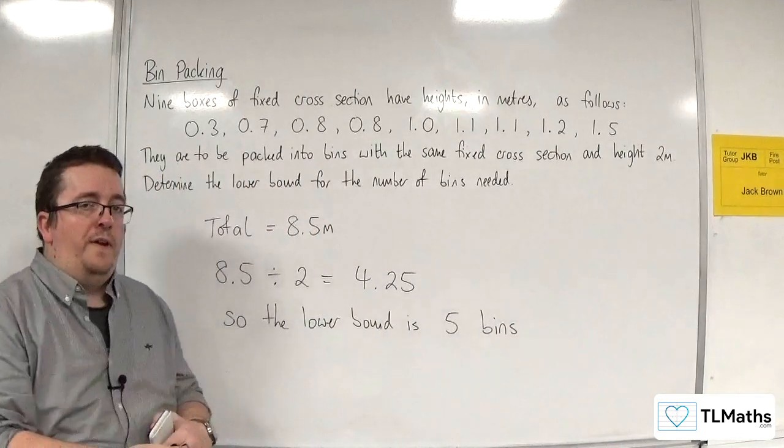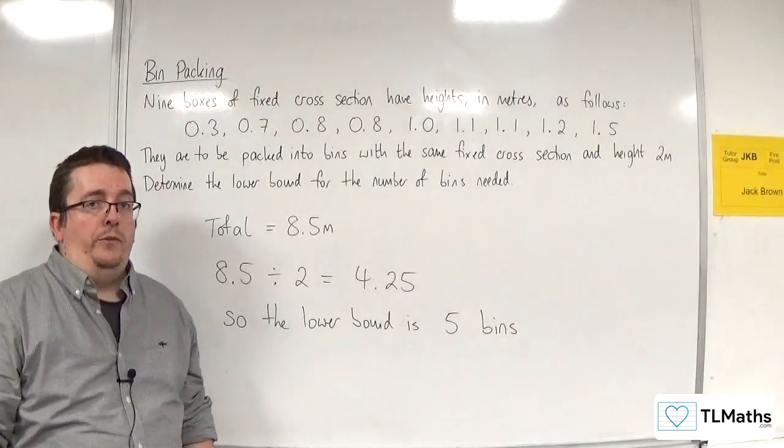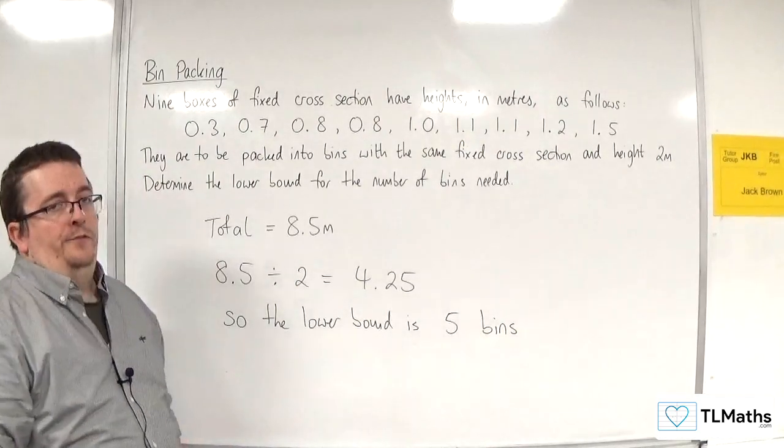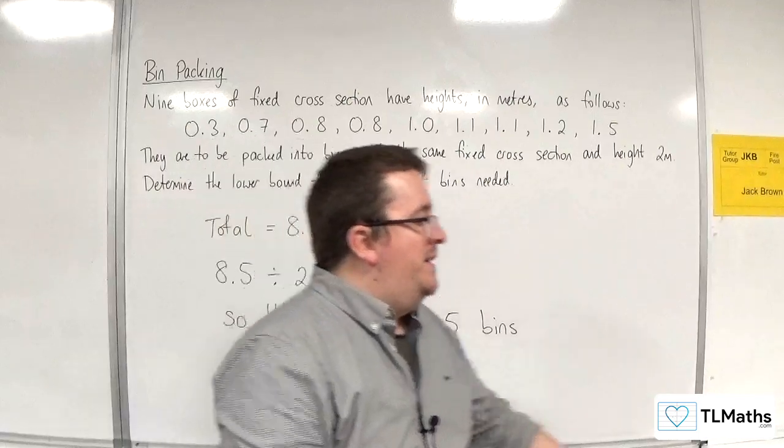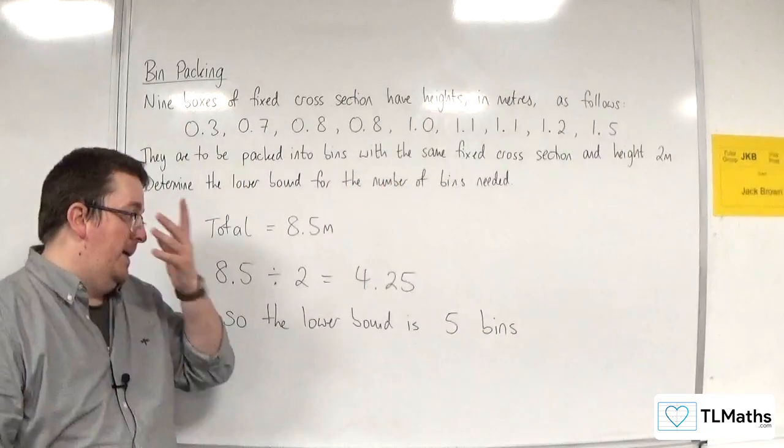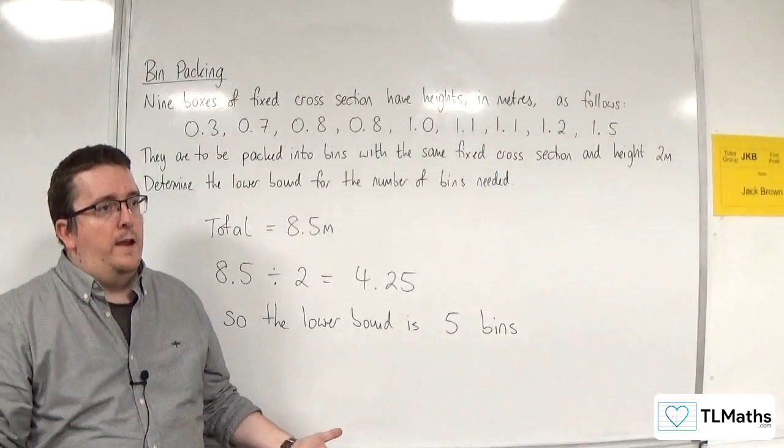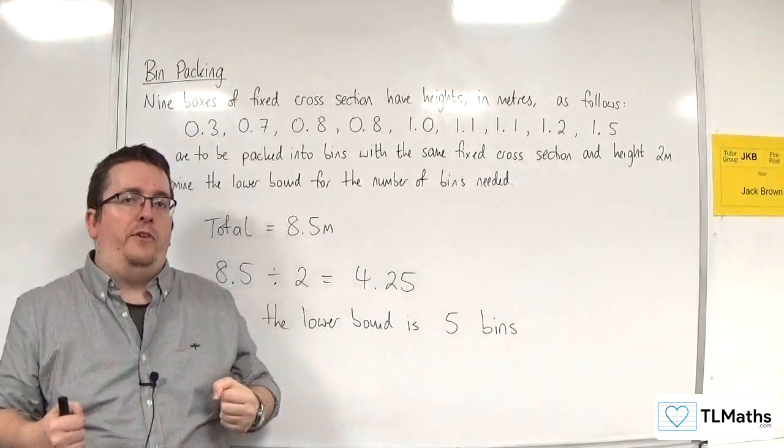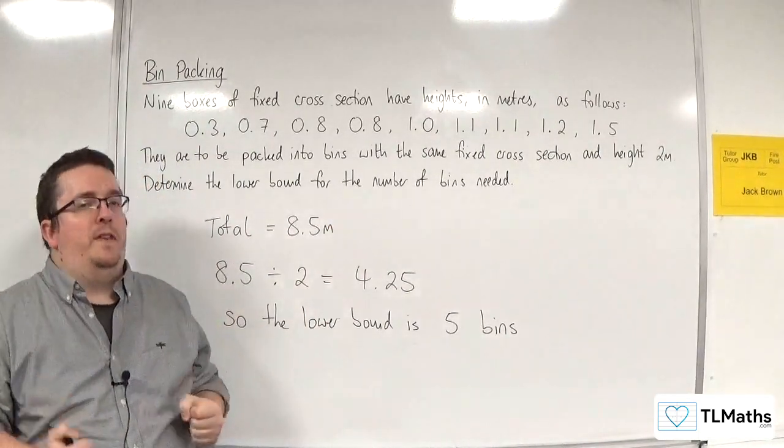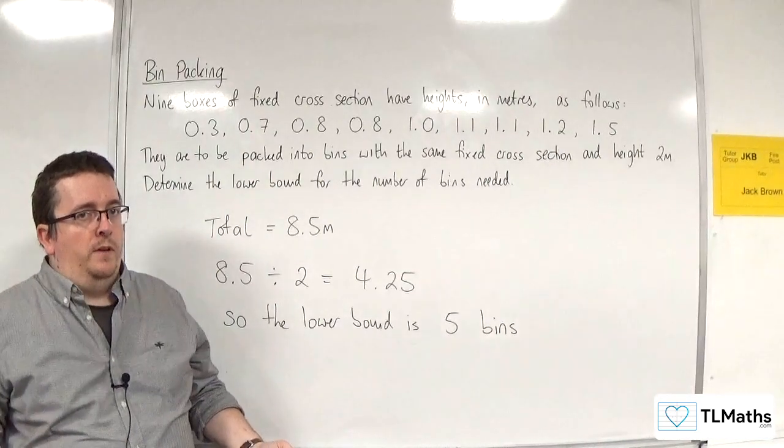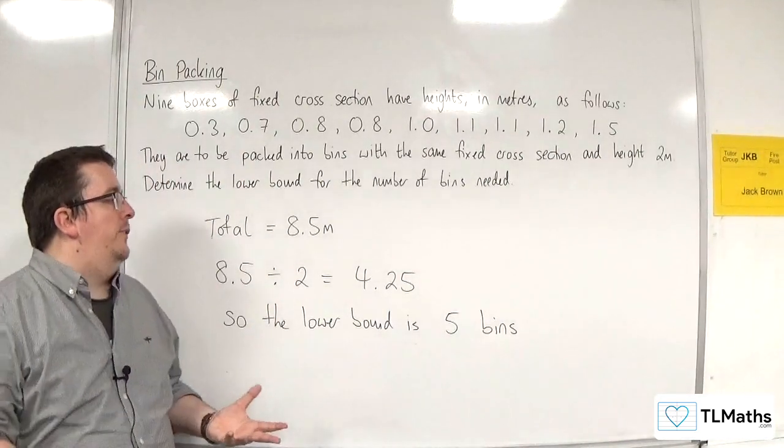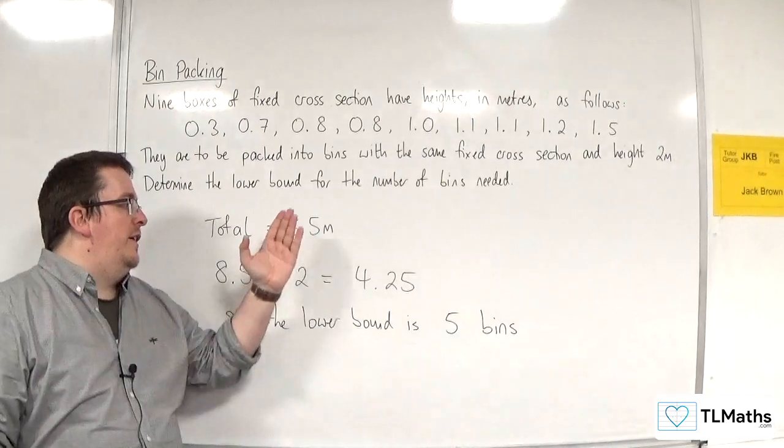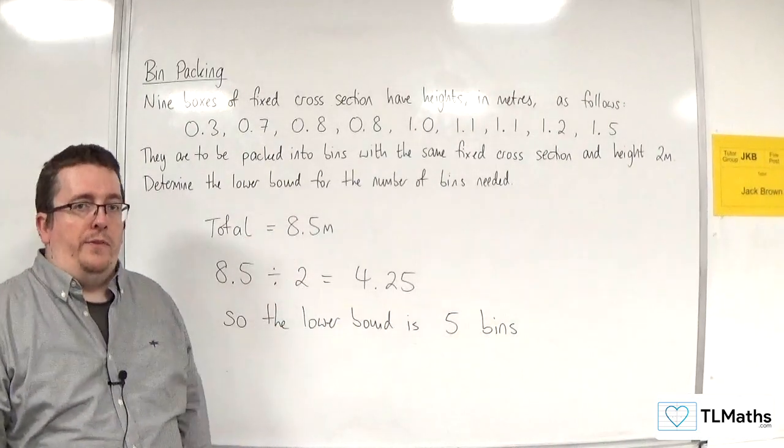Because I clearly can't fit all of those lengths into 4 bins because it goes over 4 bins. So I would need at least 5 bins in order to be able to do it. Now whether you can actually fit them into 5 bins is another matter. Because there might not be a way of maneuvering those boxes in to actually fit them into 5 bins. It might spill over to 6. But the point of this is that I can find a lower bound for the problem. And so I just add all of the lengths together and divide it by the bin's size.